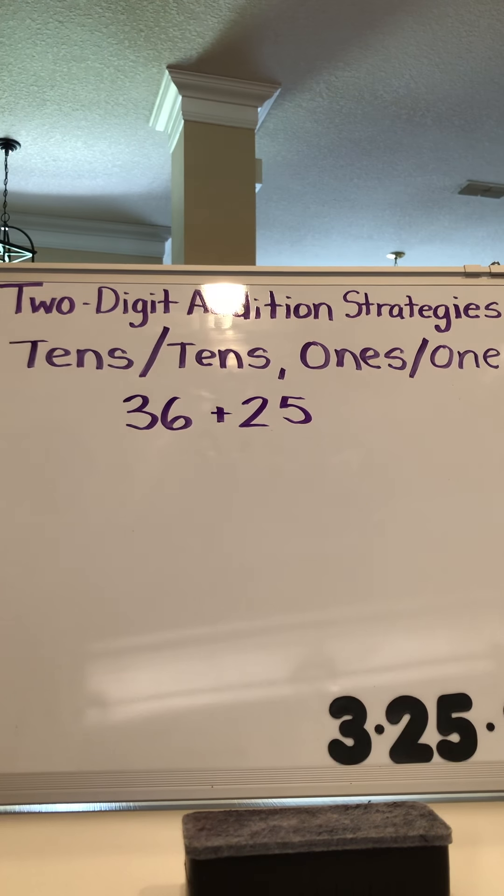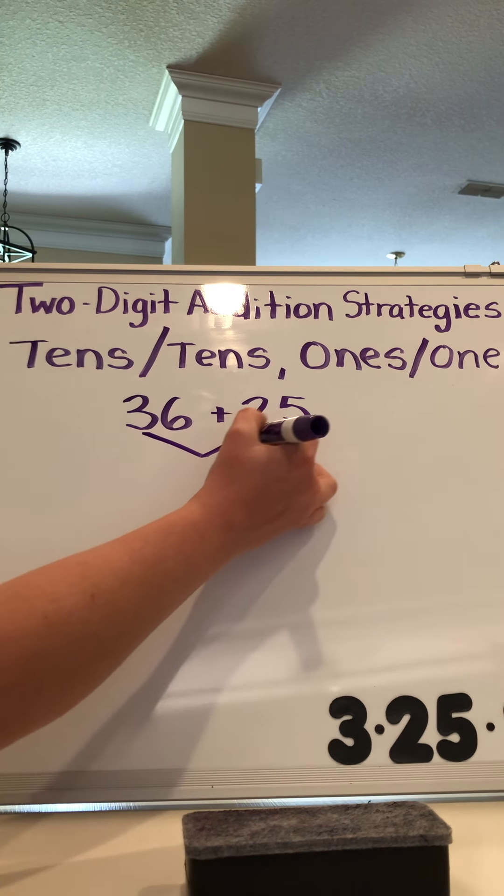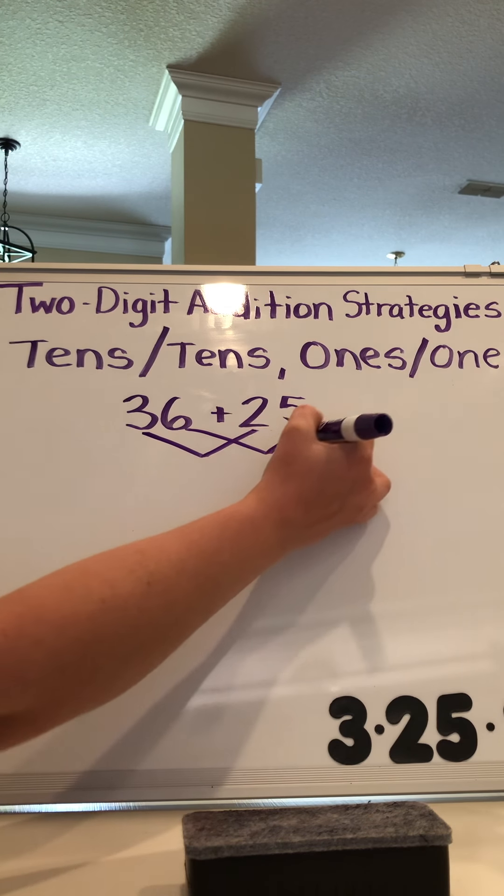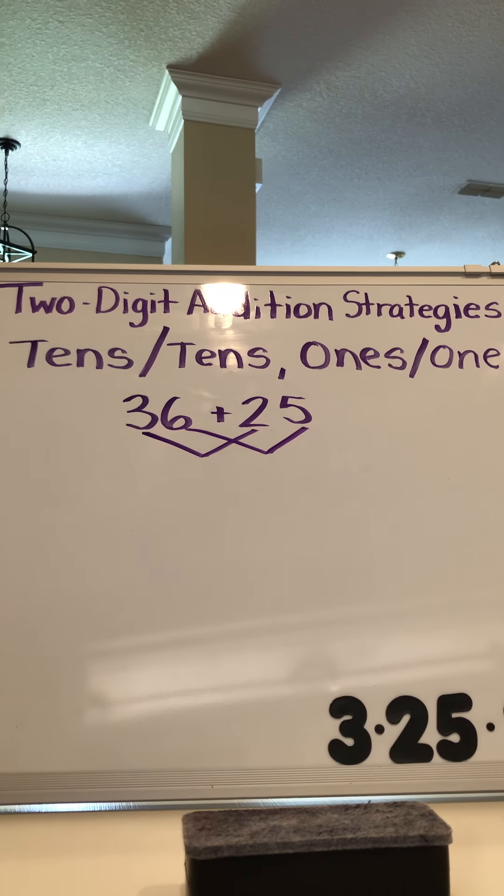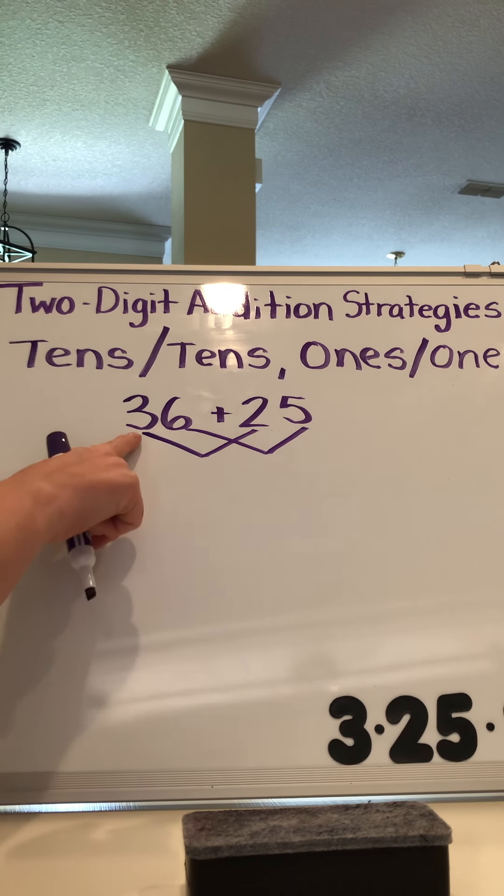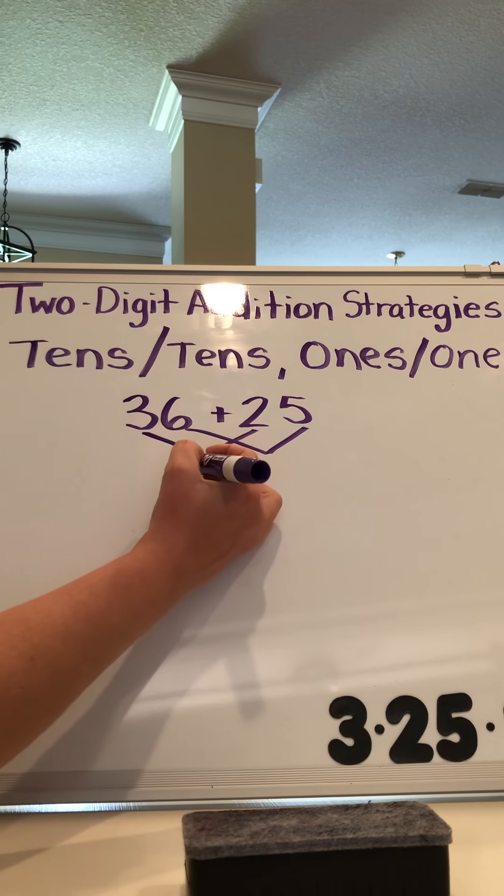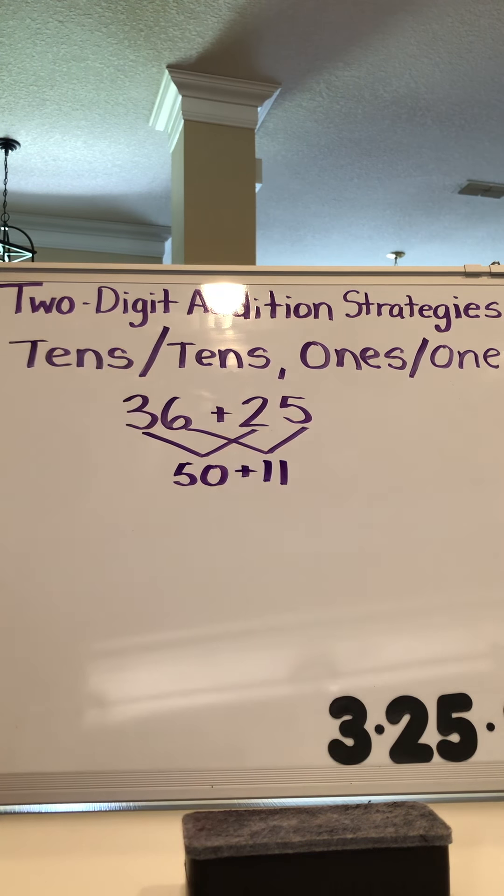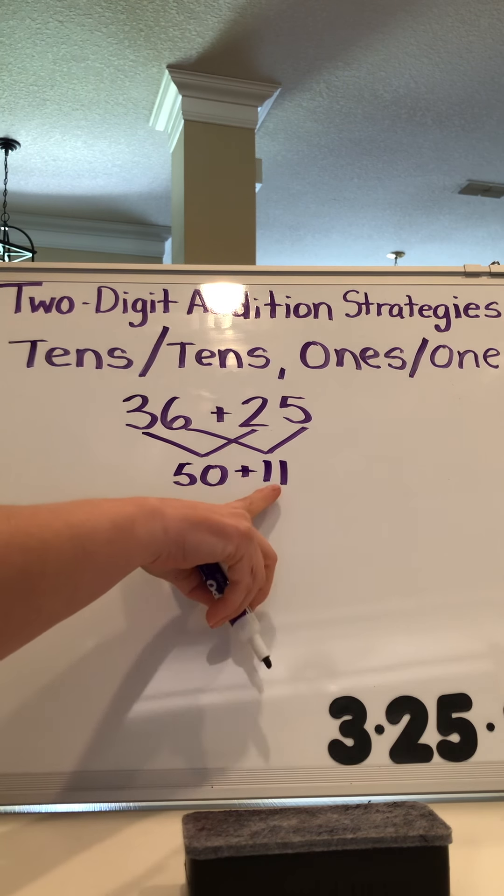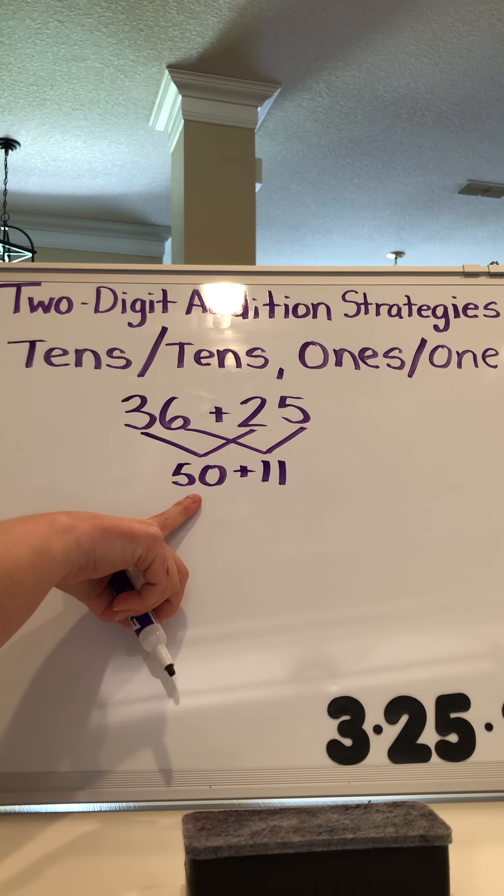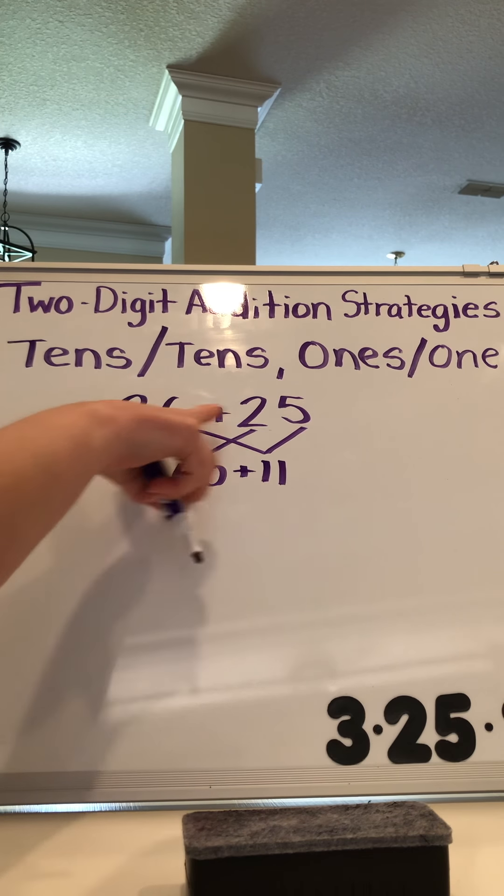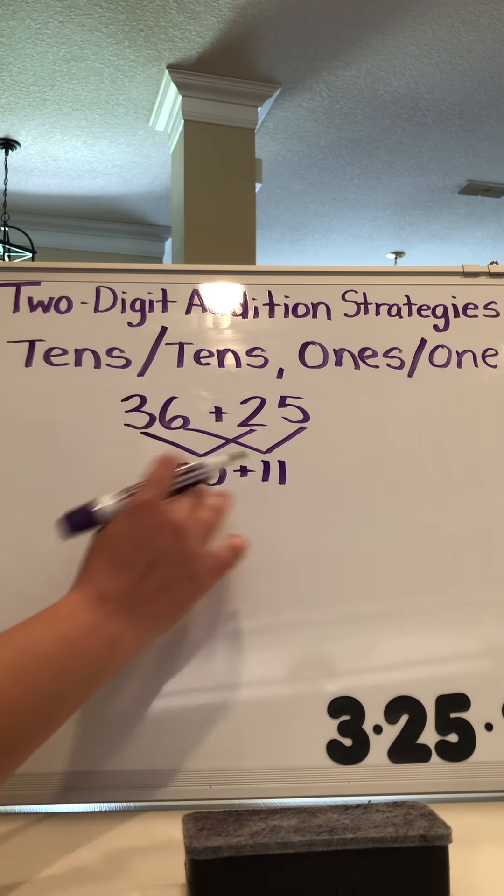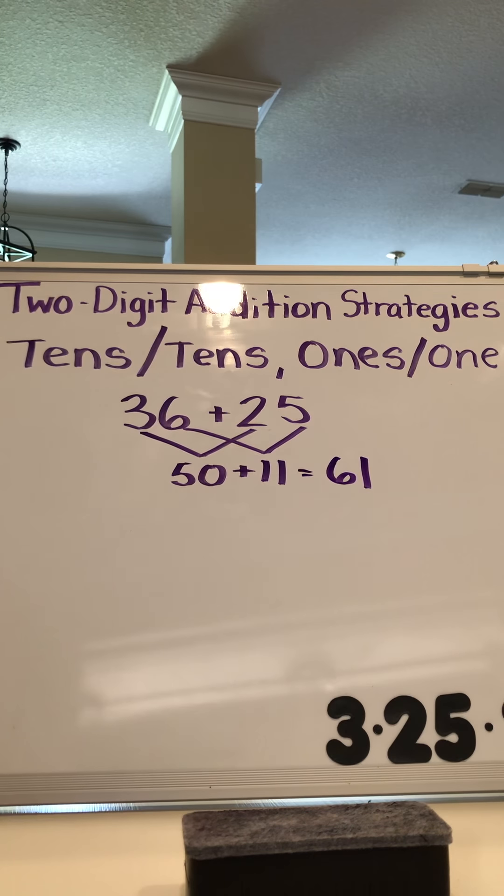So I have 36 plus 25. I'm simply going to connect my tens and connect my ones: tens tens, ones and ones. Once I do that I know that 30 and 20 is 50, 6 and 5 is 11. All I do is add up those numbers which are a lot easier to add because numbers are a lot easier to add two groups of tens than numbers with tens and ones and tens and ones. So 50 plus 11 equals 61.